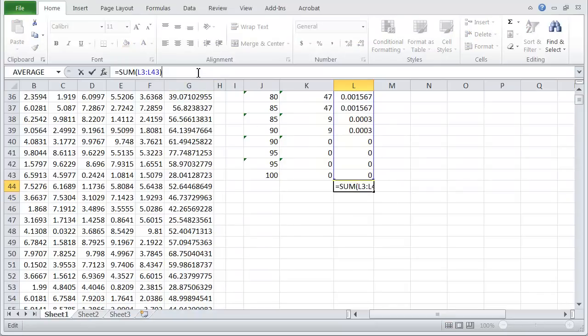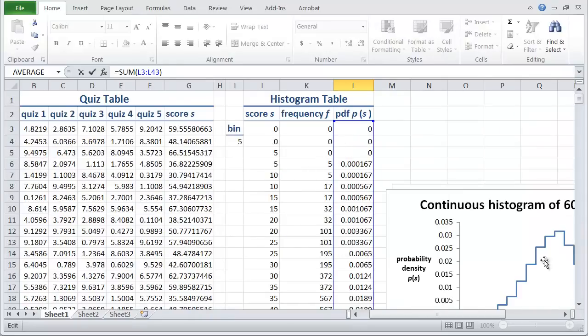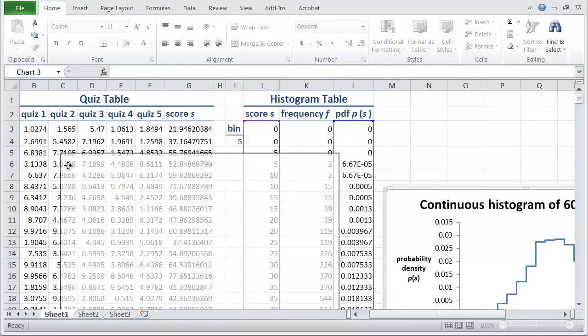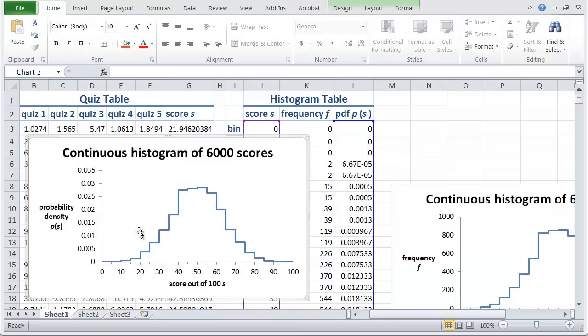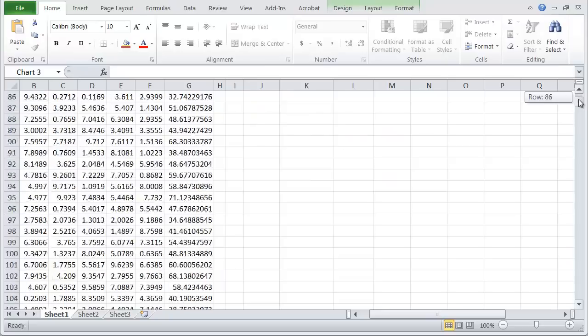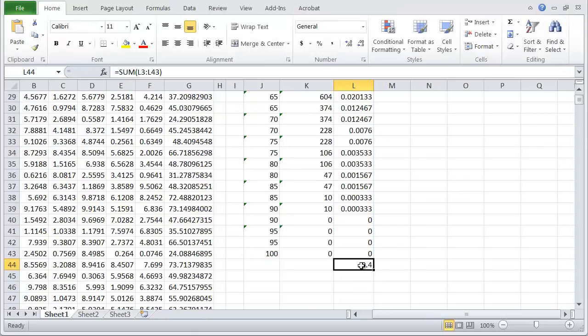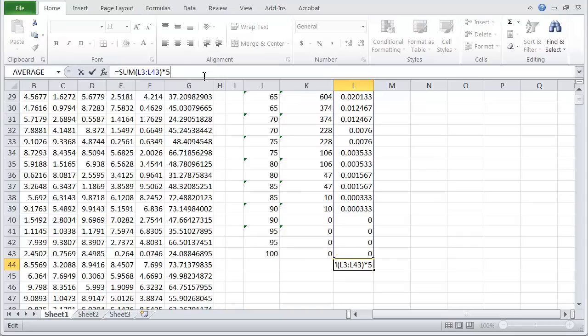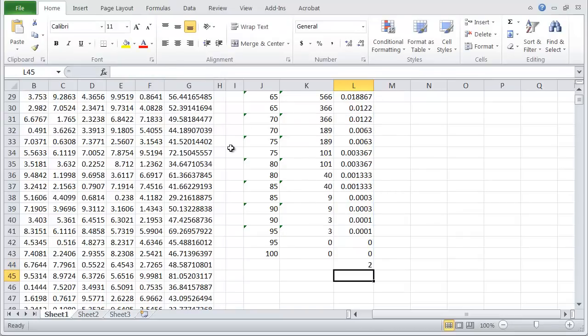Well that's not what we actually want, what we want to do is calculate the area under the graph so each of the values of the steps has, each step has a width of 5 and a height given by the value in the table so we need to multiply this thing by 5 to make it the area under the rectangle so let's multiply by 5.